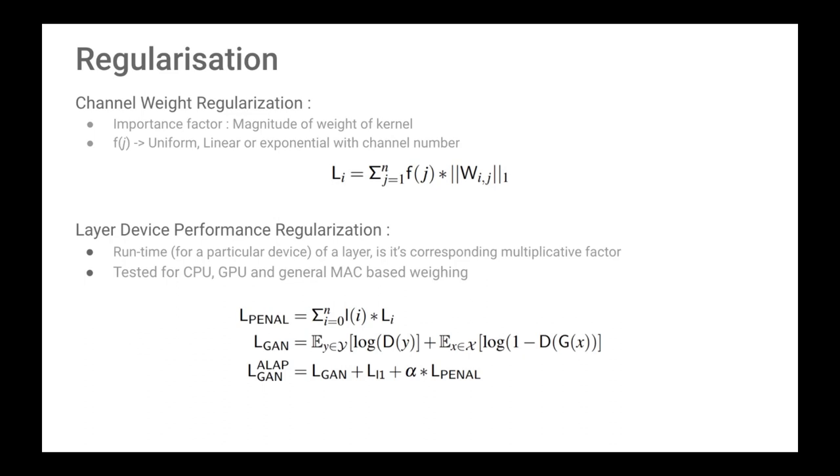Depending on the device architecture and their memory allocation, relative convolution operation speed across different spatial resolutions and feature map sizes differ considerably. For model deployment, the compute devices are generally fixed. Thus we propose a runtime layer-level device dependent channel regularization strategy. We calculate the runtime for each layer across a particular device and use it as a multiplicative factor for that particular layer to calculate the final total penalization as described in L-penal.